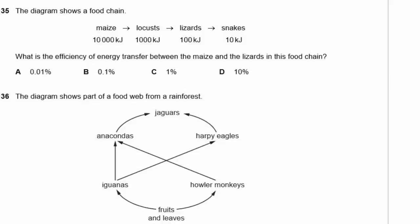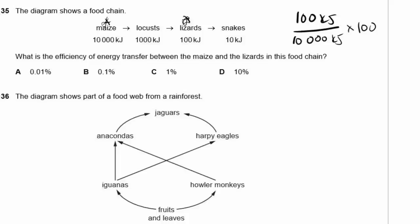Question 35: A food chain shows maize eaten by locusts, locusts by lizards, lizards by snakes, with kilojoule values at each level. What is the efficiency of energy transfer between the maize and the lizards? That's 100 kJ divided by 10,000 kJ, times 100 = 1%. The answer is C.